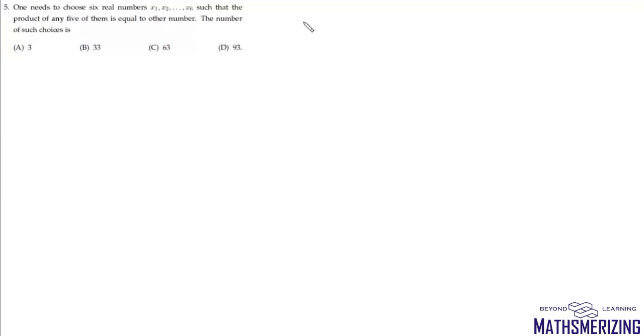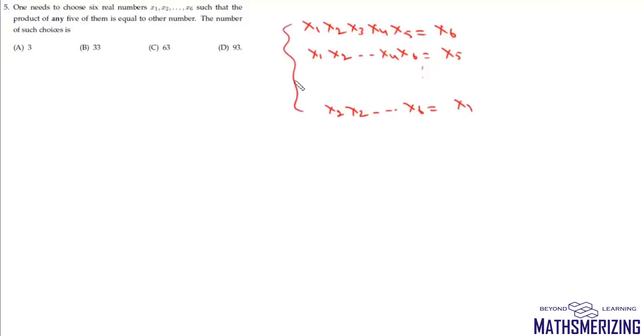Question 5: choose 6 real numbers x₁, x₂, ..., x₆ such that the product of any 5 equals the remaining number. Writing all 6 conditions and multiplying them, we get (x₁x₂⋯x₆)⁵ = x₁x₂⋯x₆, so either the product is 0 or (x₁x₂⋯x₆)⁴ = 1, meaning x₁x₂⋯x₆ = ±1.